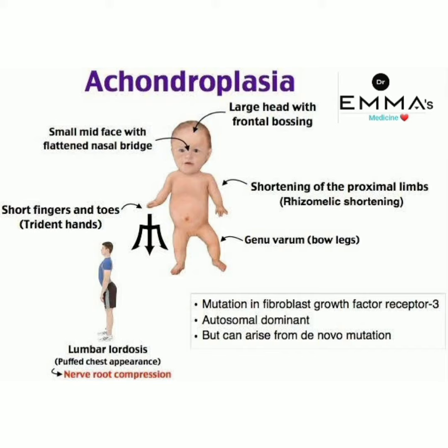Looking at the image again, the presentations are: large head with frontal bossing, small mid face with flattened nasal bridge, shortened fingers and toes, trident hands, rhizomelic shortening of the proximal limbs, and genu varum. If nerve root compression occurs, we see lumbar lordosis and puffed chest appearance in achondroplasia.